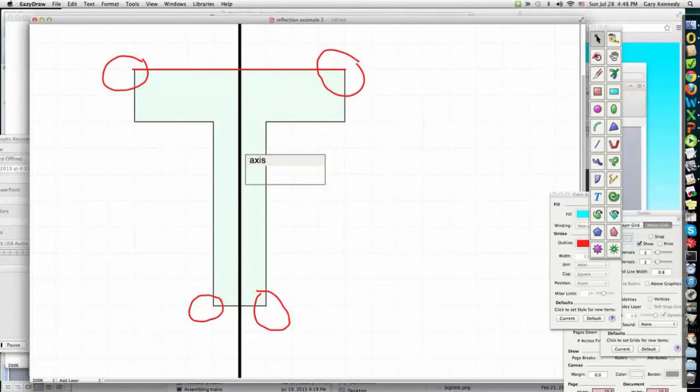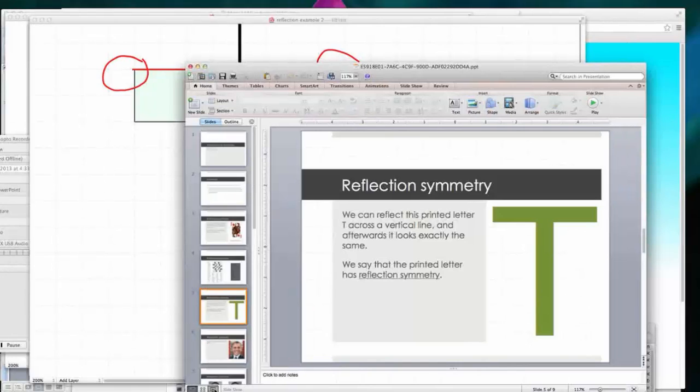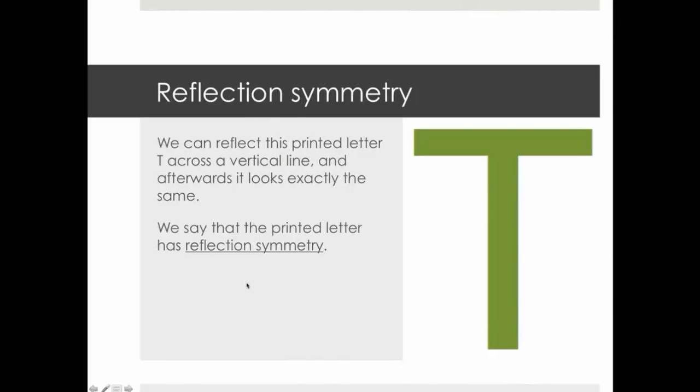For a reflection, there is a line called its axis. In this particular example, this is a vertical axis. We can also have a horizontal axis, and we can even have axes which are diagonal or oblique. In any case, looking again at this letter T, as we've said, it's possible to reflect it across a vertical line. And therefore, we say that this letter has reflection symmetry.